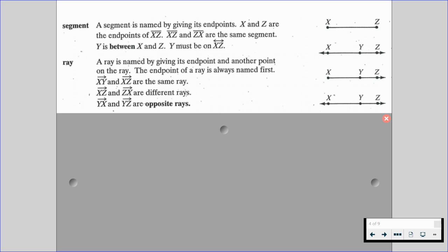Ray XZ and ray ZX are different rays, but ray YX and ray YZ are what we call opposite rays. The reason they're called opposite rays is because they're starting with the same endpoint and going in the opposite direction. So if we're looking at point Y, point X is to the left of it and point Z is to the right of point Y.